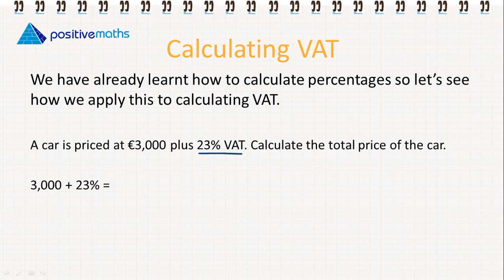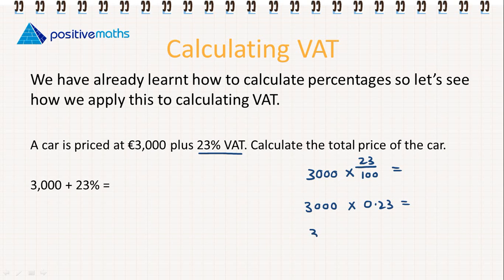We have three different ways we can find a percentage. We can find it by using a fraction, so we multiply by 23 over 100. We can find it by using a decimal, multiplying by 0.23. Or we can use the percentage itself, so 3,000 multiplied by 23%. The answer for all three will be 690.